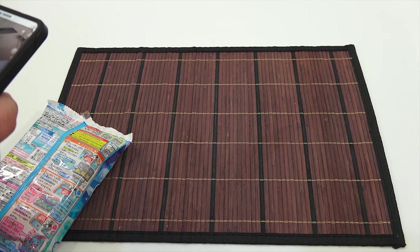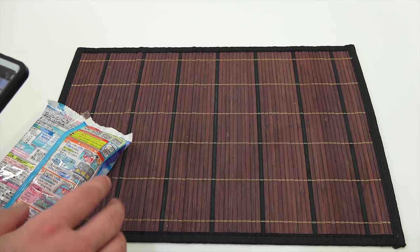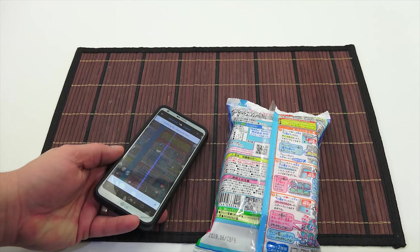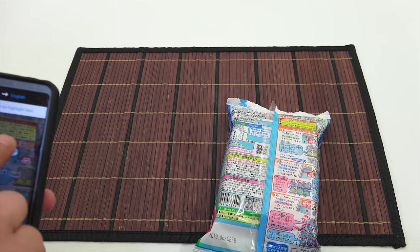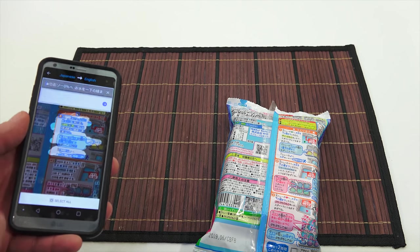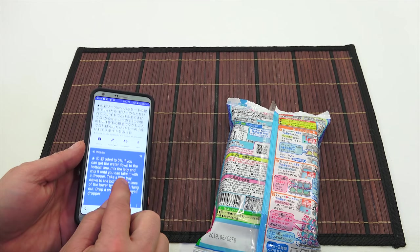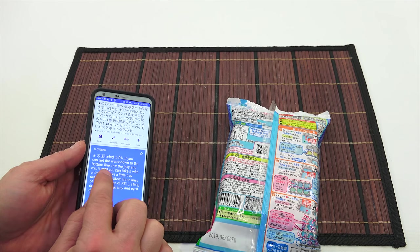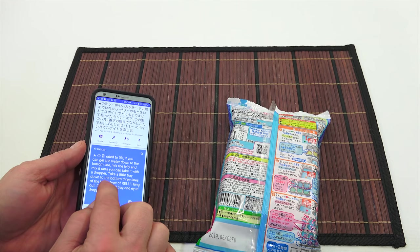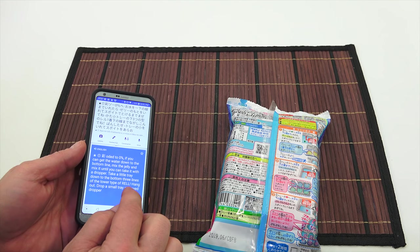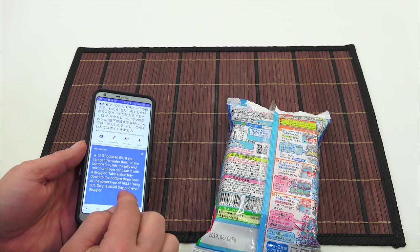That's what it looks like, the G. And then, I hold it over. I hit the camera button. Let's hold it over that section. I take a picture. It scans it, and then I can use my finger to go over the words. And it says, now, a lot of times, it's kind of funny. If you can get the water down to the bottom line, mix the jelly, and mix until you can take it with a dropper.